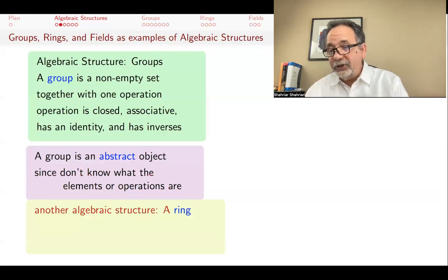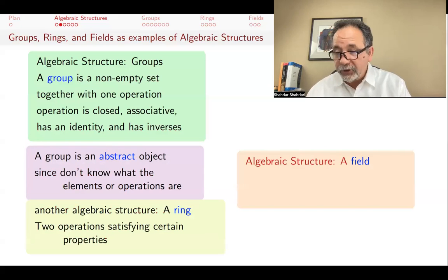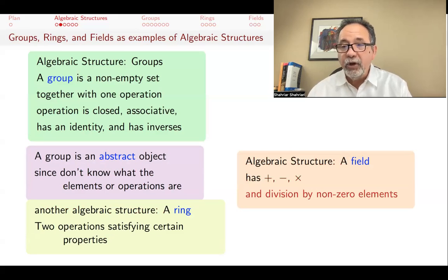Rings are another algebraic structure. This is a set with two operations. We usually call them addition and multiplication. And again, they follow certain rules. And fields are a special case of rings, where we have four arithmetic operations: addition, subtraction, multiplication, and division by non-zero elements. And both operations, addition and multiplication, are commutative.